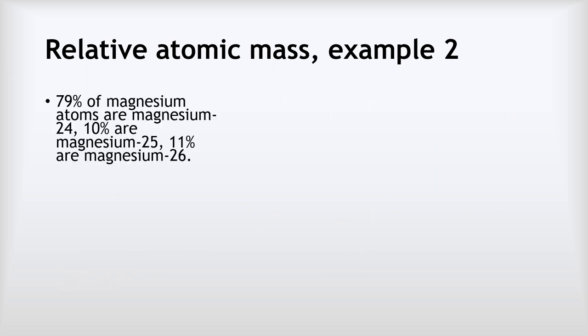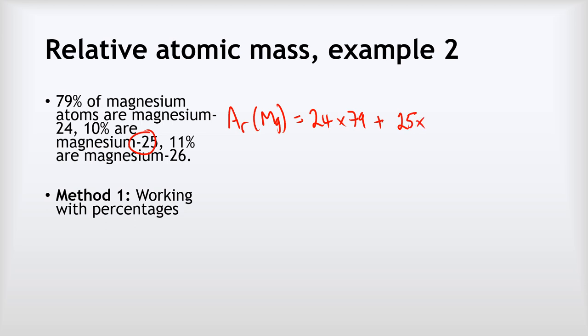Finally, one last example is magnesium. This time there are three isotopes, but the maths works the same. Let's work with percentages first of all. Relative atomic mass in brackets of magnesium equals: our first isotope is 24, and that is 79%, so 24 times 79. Then our second isotope has a mass of 25, so do 25 multiplied by its abundance, which is 10%. Then add that to the third isotope, which has a mass of 26, multiplied by its abundance, which is 11. Divide that by all of the abundances added together: 79, add 10, add 11. If we do that, we get 24.32 as our final answer.